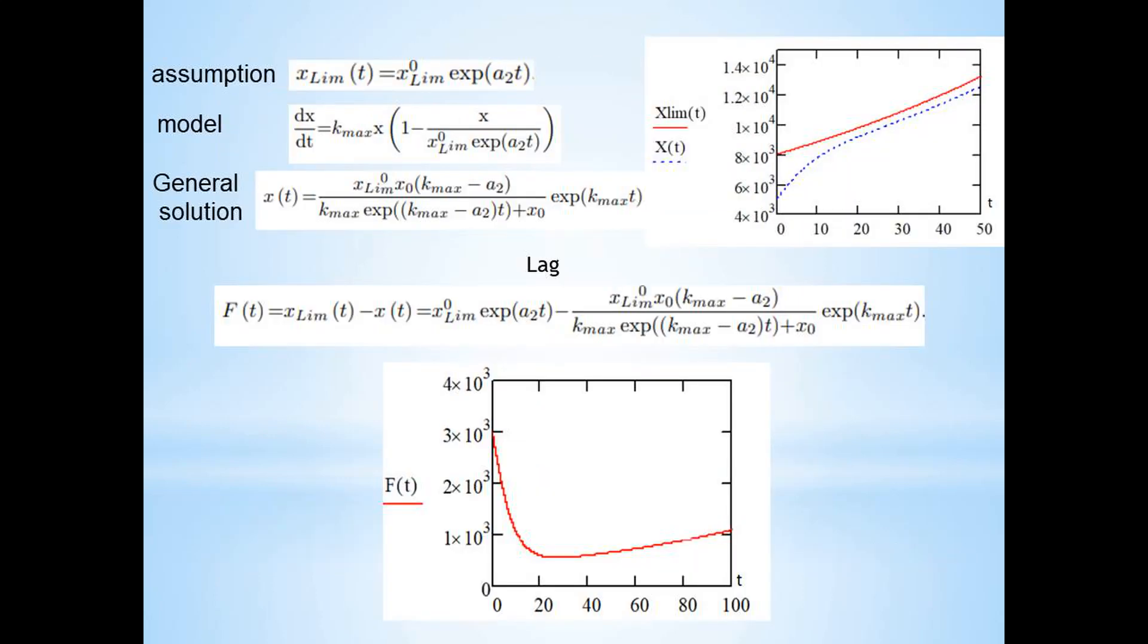A more general case is when the limiting parameter changes with time. This situation may be a consequence of the development of technologies that allow gradually increasing the effectiveness of economic activity without increasing environmental damage and without increasing the ecological footprint. We will use the assumption that there is a direct relationship between the innovative level of technology and the level of production acceptable from the point of view of environmental safety. In this case, the model can be presented in the form of an equation, the general solution of which is presented on the slide.